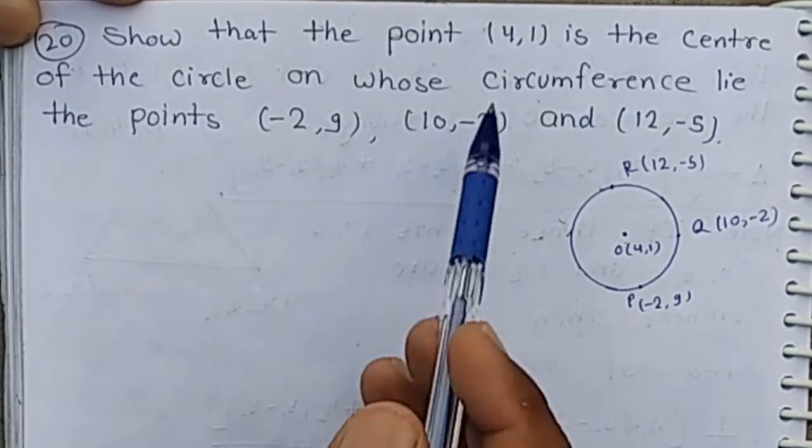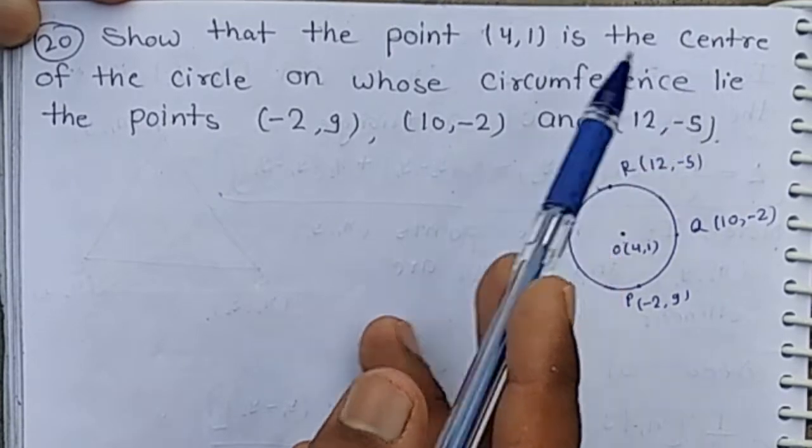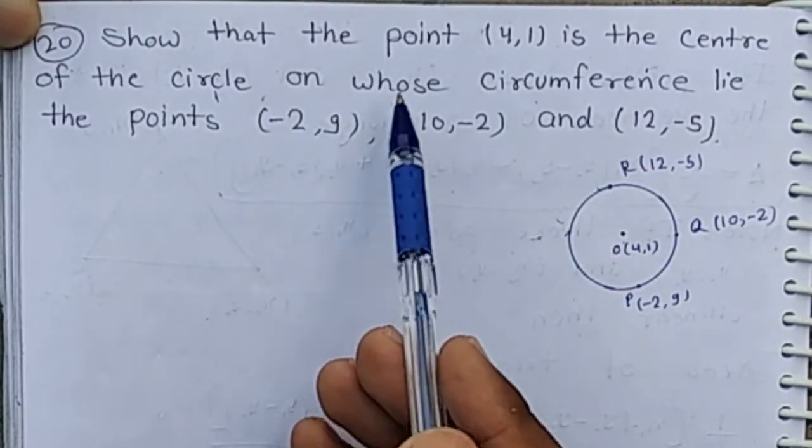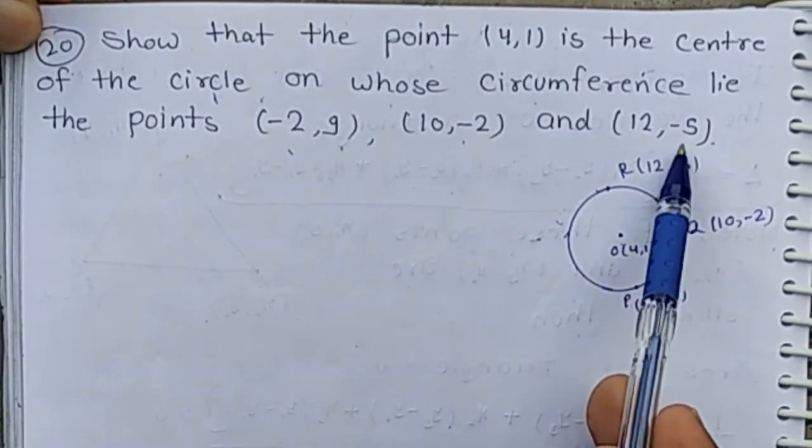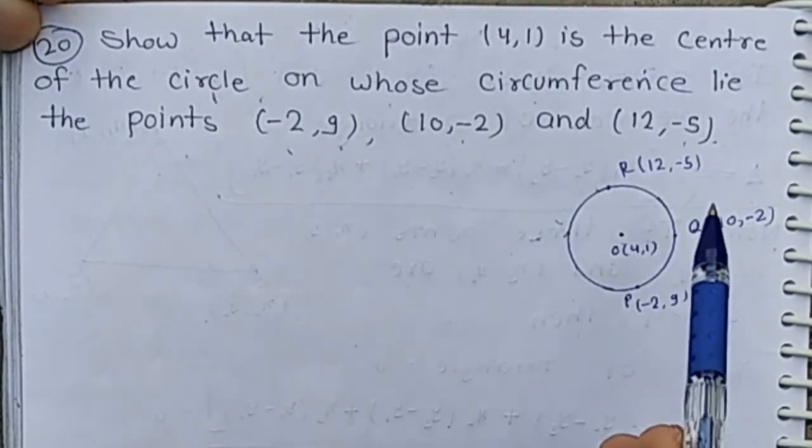Question number 20: Show that the point (4,1) is the center of the circle on whose circumference lie the points (-2,9), (10,-2), and (12,-5). Means we have to show that (4,1) is the center of the circle.